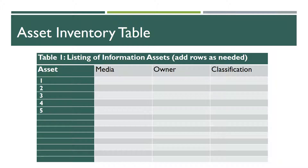Let's first look at the asset inventory table, part of the Word document you downloaded. First, you need to list the assets — for instance, the employee database could be an information asset. For the media, that's the desktop, laptop, or the HRIS. Or media could be the organizational SAN or the cloud backup — those four. The owner would be the individual authorized to create and assign rights to the information assets.